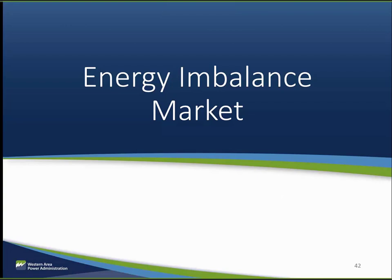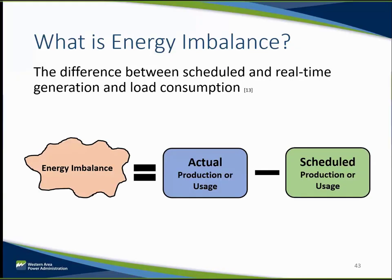The next construct we will discuss is the energy imbalance market construct. This construct has been used in the eastern interconnection and is currently becoming more prominent in the western interconnection. With an energy imbalance market, the underlying bilateral market construct remains, but an extra layer is added to allow the market operator to adjust for the differences between scheduled production and usage and actual production or usage in real time using security-constrained economic dispatch.